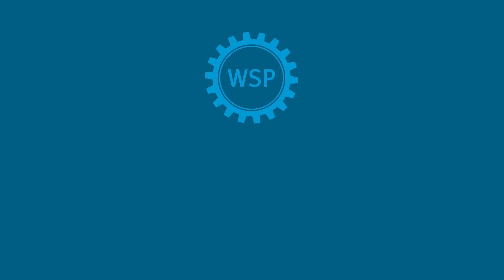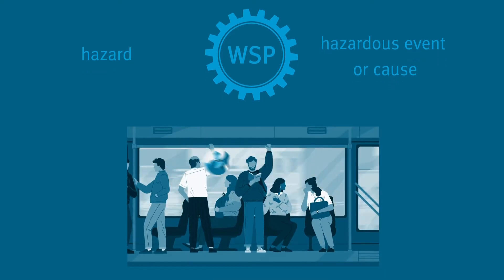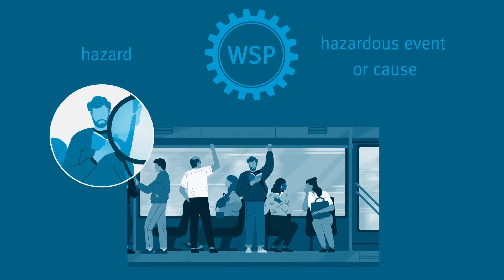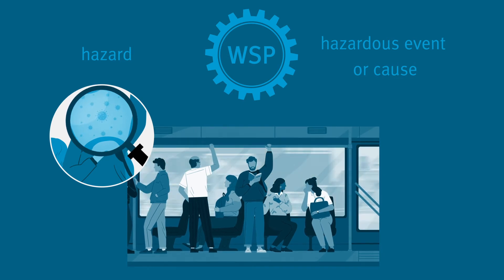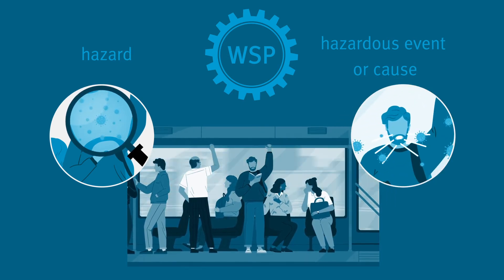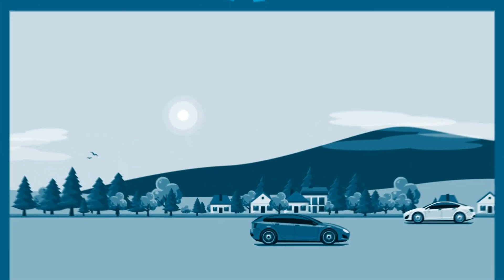The Water Safety Plan distinguishes between hazards and a hazardous event. An example from everyday life: the viruses from a person with a cold on the train are indeed a hazard, but it is the sneezing that creates a hazardous event.